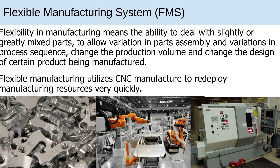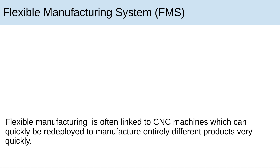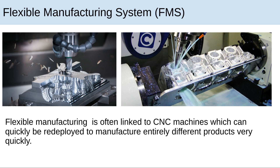Flexible manufacturing systems: Flexibility in manufacturing means the ability to deal with slightly or greatly mixed parts, to allow variation in parts assembly and variations in process sequence, change the production volume, and change the design of certain products being manufactured. Flexible manufacturing often utilises CNC manufacture to redeploy manufacturing resources very quickly. Flexible manufacturing systems, FMS, are often linked to CNC machines, which can be quickly redeployed to manufacture entirely different products very quickly.